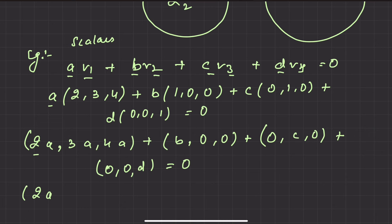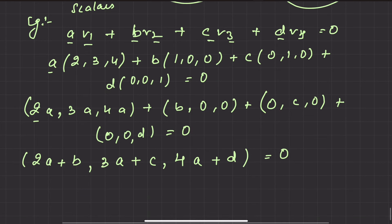Now we take the first element in each bracket. This will be 2a plus b. The second term will be 3a plus c. Last term will be 4a plus d. This term will be equal to 0.